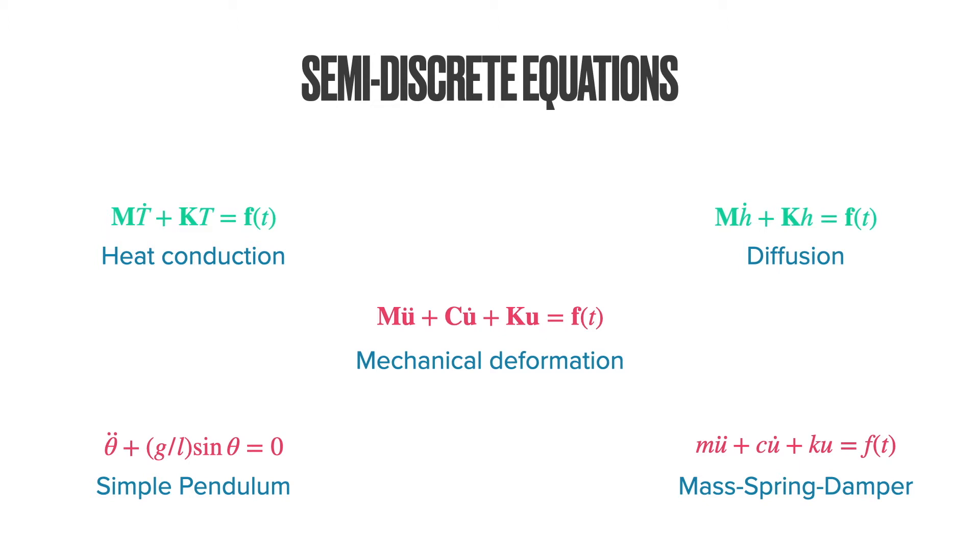And now the question is how do we solve these equations? These equations are continuous in time. We can do something analogous to the discretization in space, the so-called time-stepping. The simple basic idea is to divide the timeline into discrete steps, and these steps in between them are approximated.